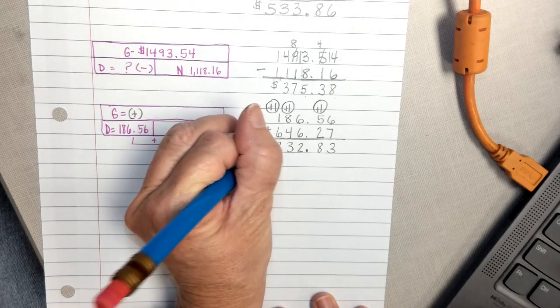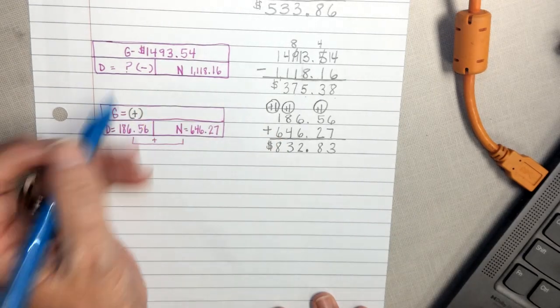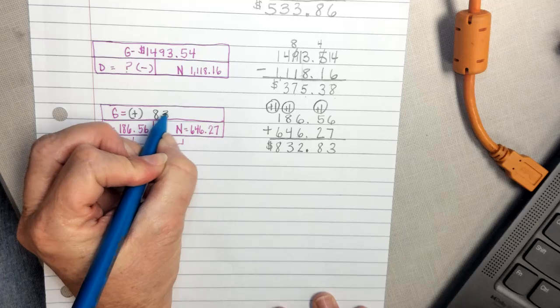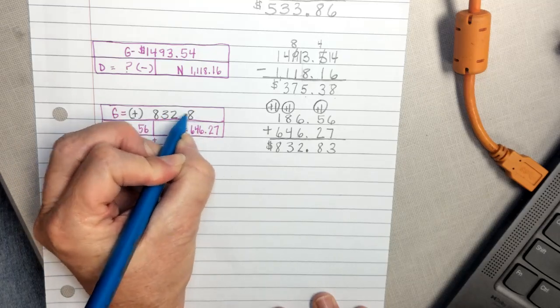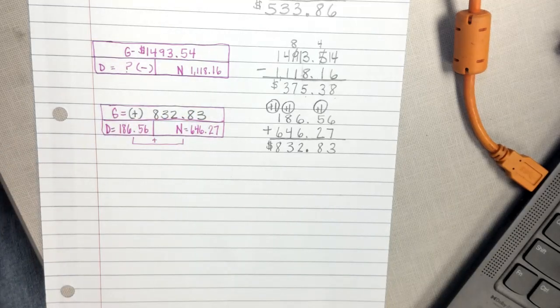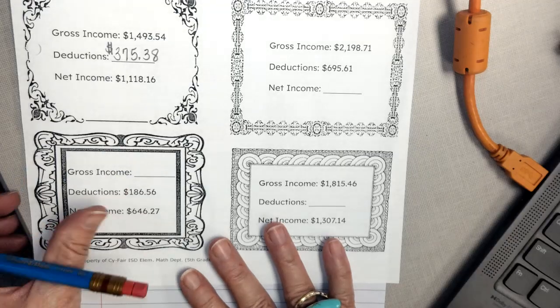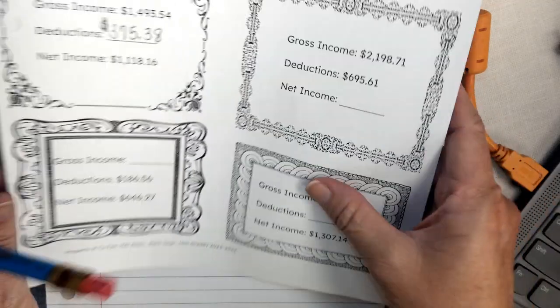So my total or my gross is $832.83. I'm going to go back to my paper and I'm going to record that information in the box.